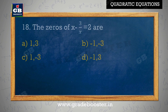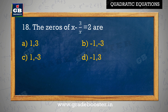The zeros of x minus 3 by x equal to 2 are: A. 1 and 3, B. minus 1 and minus 3, C. 1 and minus 3, D. minus 1 and 3.